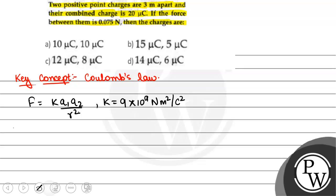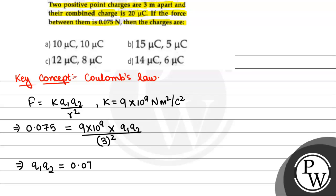Now, F value is equal to 0.075 Newton, that will be equal to K value 9 into 10 to power 9 multiplied by Q1 Q2, and R square value is 3 squared.